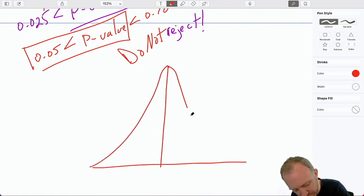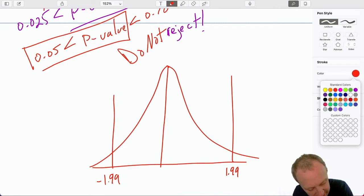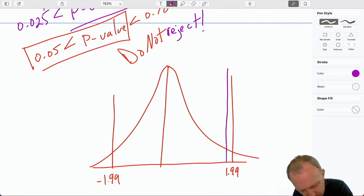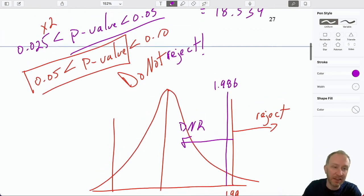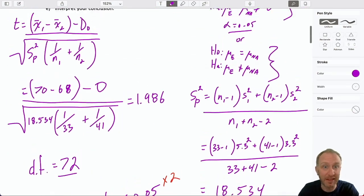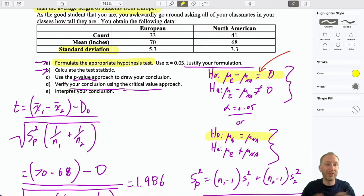And we'll draw a little picture. Here's that positive 1.99. Of course, it's a two-tail test, so I actually have a positive and a negative critical value. Our test statistic here was very close, 1.986. Well, it's not in our rejection space. It is, albeit very close, in our do not reject space. So both of the approaches, the critical value approach and the p-value approach, bring us to the same conclusion as they should. We have insufficient evidence to reject the null hypothesis. We are unable to show that there is any statistically significant difference in the average height between the European students and the North American students.